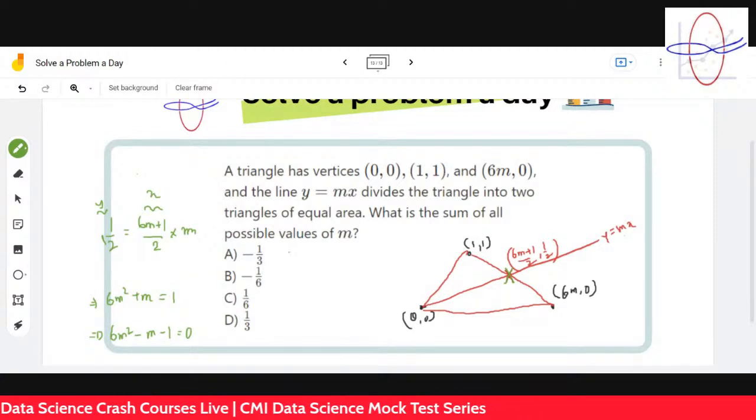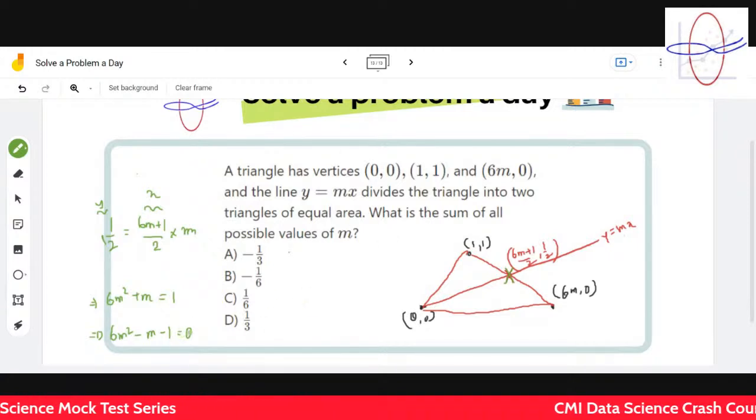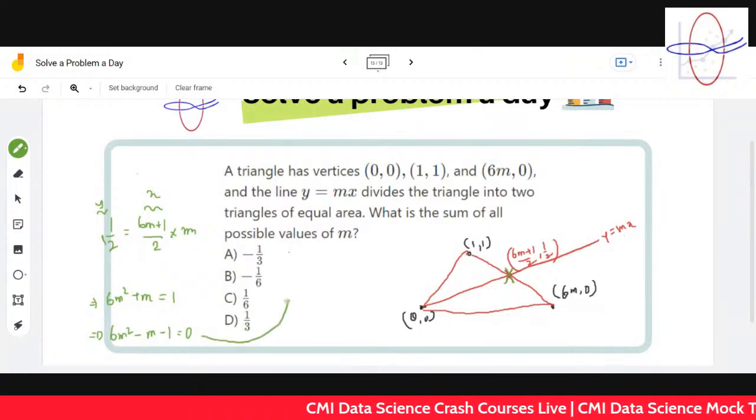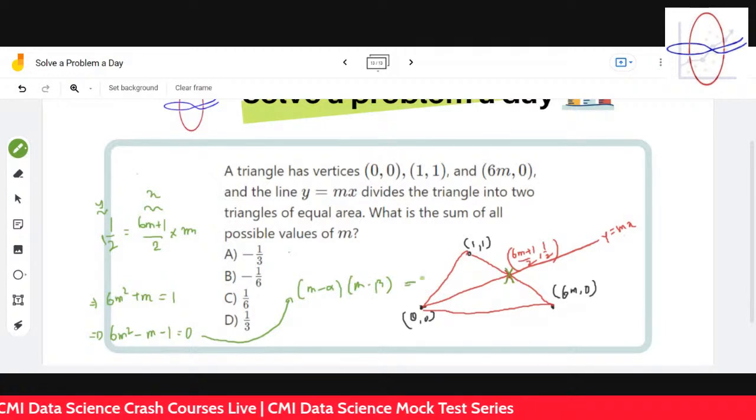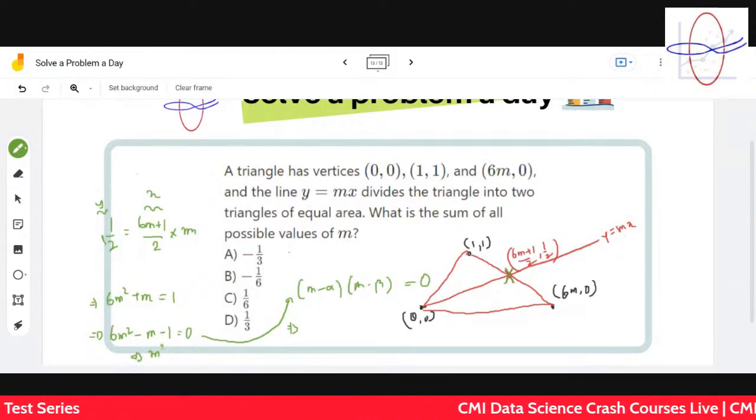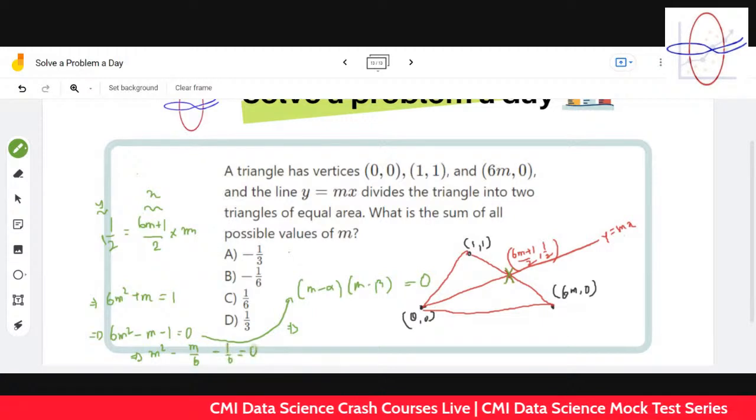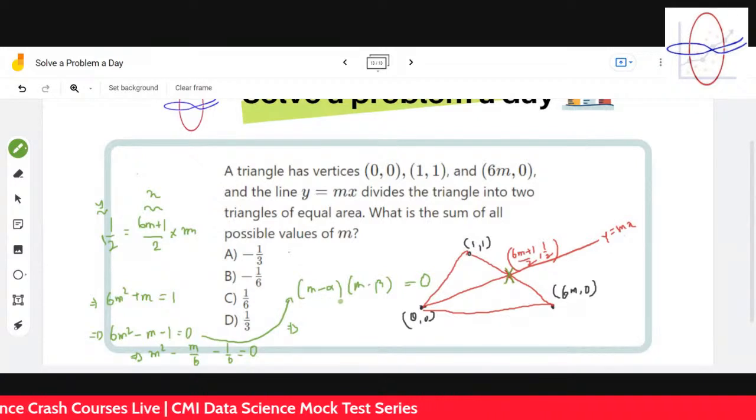We're asked for the sum of all possible values of m. Let's say the two values of m are alpha and beta. We get (m - alpha)(m - beta) = 0. We can write m² - m/6 - 1/6 = 0, and we get m² - (alpha + beta)m + alpha·beta = 0.